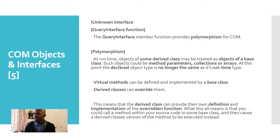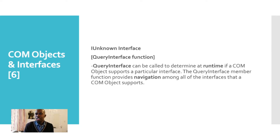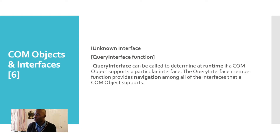Let's talk a little bit more about the QueryInterface function. This is a member function of the IUnknown interface. QueryInterface can be called to determine at runtime if a COM object supports a particular interface. The QueryInterface member function provides navigation among all of the interfaces that a COM object supports.